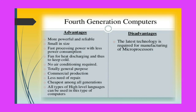The advantages of fourth generation computers include: they are more powerful and reliable, smaller in size, with fast processing power and less power consumption. A fan is used for heat discharging to keep temperatures low. No air conditioning is required, saving energy. They are used for general purpose and commercial production. They need less repairing and are the cheapest among all generations. All types of high level languages — understandable by both computers and humans — can be used. The disadvantage is that the latest technology is required for manufacturing of microprocessors.